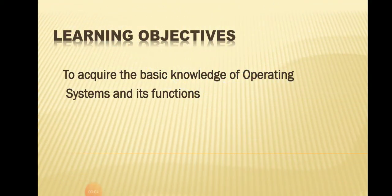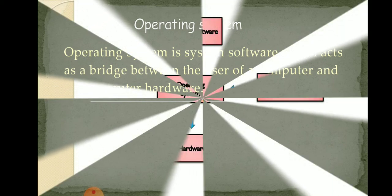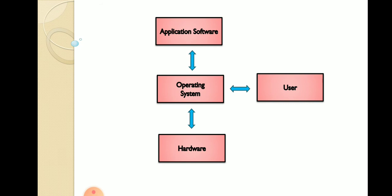Welcome to all of you. In this module we are going to see the basic knowledge of operating systems and its functions. An operating system is a system software which acts as a bridge between the user of a computer and the computer hardware — it is the interface between the user and the computer hardware.